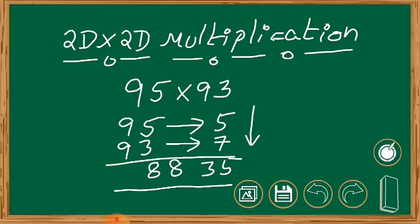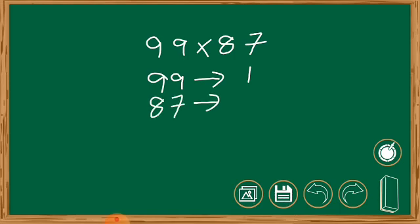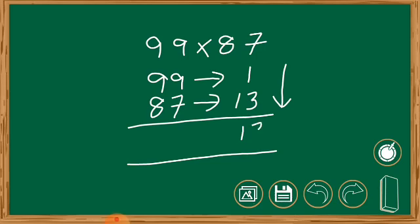So let us try with more examples now. Let me consider 99 into 87. I want everyone to do this sum so that it will be very easy for you and you can understand easily. 99, we still require one number to make it 100. 87, we require 13 to make it to 100. Now multiply 1 into 13—you will get 13. Cross subtract: 87 minus 1 is 86. So the answer is 8613.